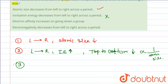The third option is saying electron affinity increases on going down a group. Electron affinity actually decreases down the group, because electrons are placed in higher energy levels far from the nucleus. The increased nuclear charge as you go down the group is offset by extra screening electrons.